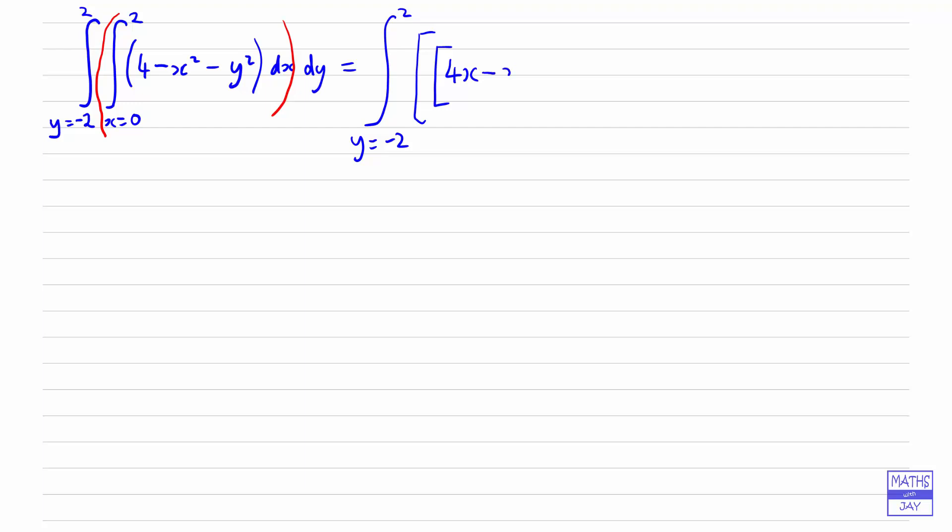Here we are thinking of y as a constant, so when we're integrating y squared with respect to x, well y squared is just a constant so we're just going to multiply it by x. We're going to get minus x y squared, and our limits there are x equals 0 and 2, and then that is dy.